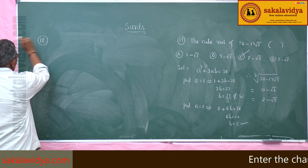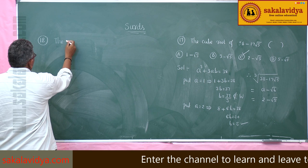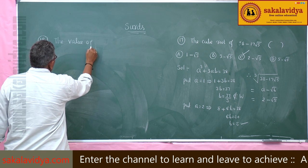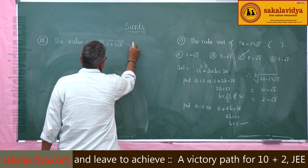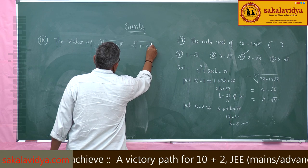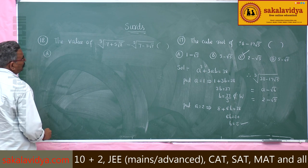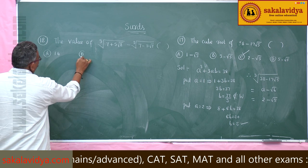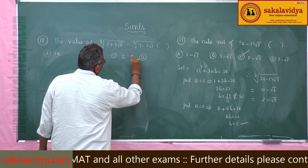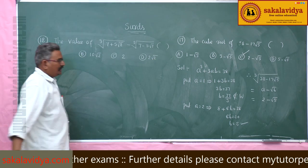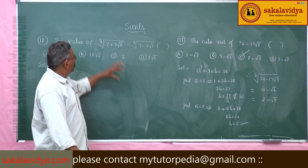Let us find out one more value. The value of cube root of (7 + 5√2) minus cube root of (7 - 5√2). Option a: 14, option b: 10√2, option c: 2, option d: 2√2. Let us do it. First, let us find out the cube root of 7 + 5√2.